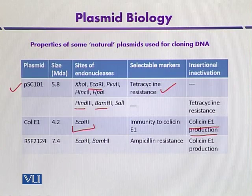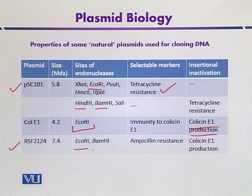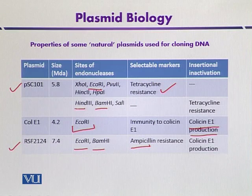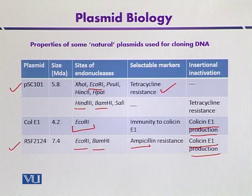The last example is RSF2124, a derivative of the ColE1 plasmid. It carries restriction sites for EcoRI and BamHI, and contains an additional transposon that can mediate ampicillin resistance. Colicin E1 production is also present. When foreign DNA is inserted within the gene that encodes Colicin E1 production, it will become inactivated so that the cell will become sensitive to Colicin E1, acting as a selectable marker.